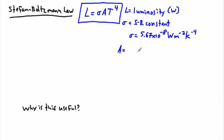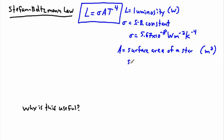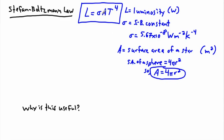A is important — this is the surface area, so this could be the surface area of a star, for example. That's measured in meters squared. It's important to understand how the surface area of a sphere works: the surface area of a sphere equals 4 pi r squared. So A contains that term — if you're looking at the surface area of the star, we're talking about 4 pi r squared, meaning we know something about the radius of the star.